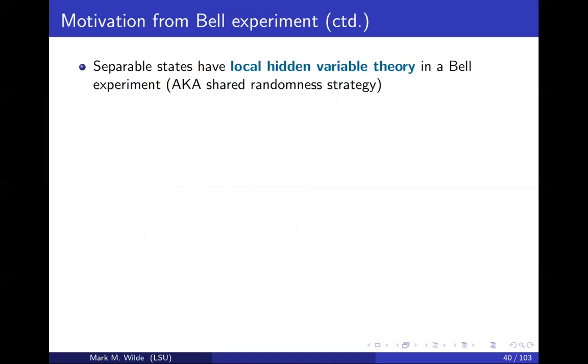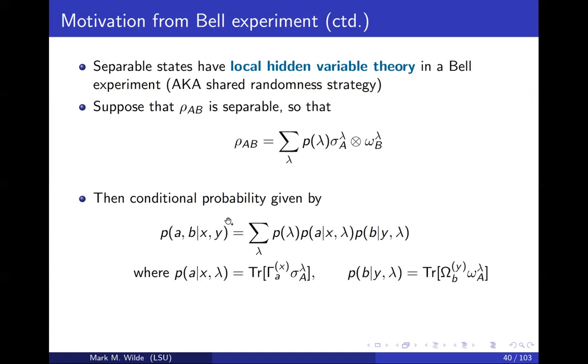Separable states have what's called a local hidden variable theory that describes what's going on. In short, there's a classical explanation for what's going on in a Bell experiment when you use a separable state. To see this, let's suppose that rho AB is separable, so that means you can write it as a convex combination of product states.